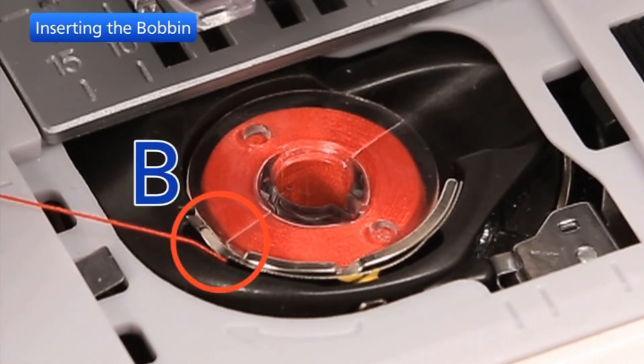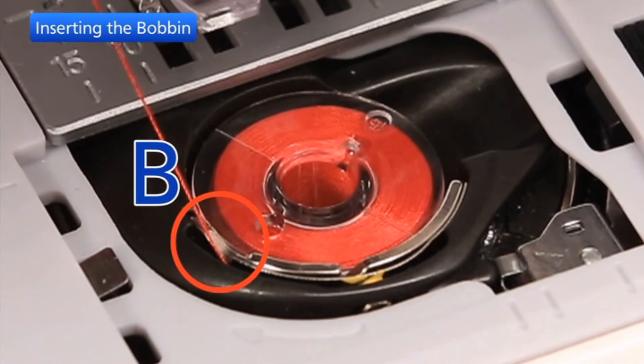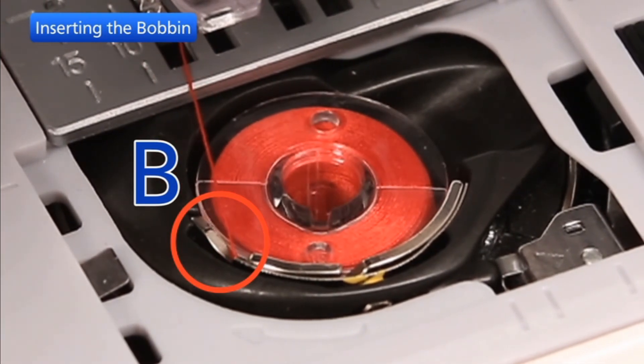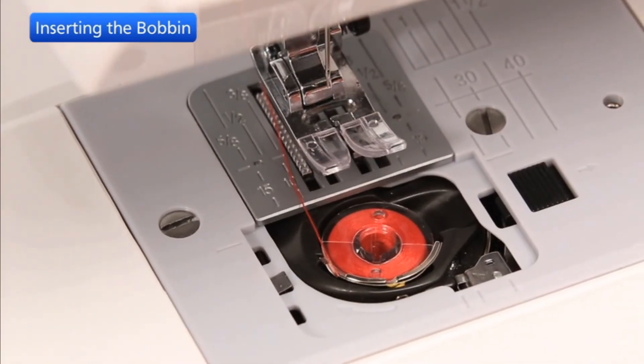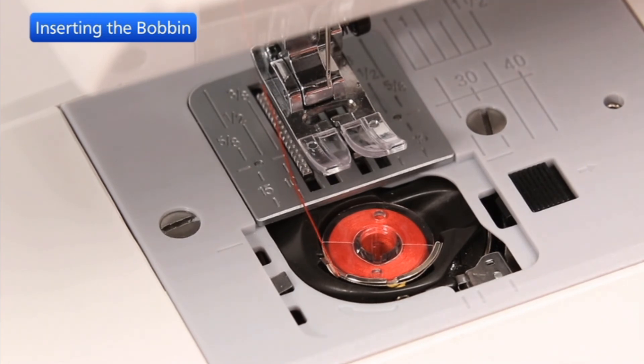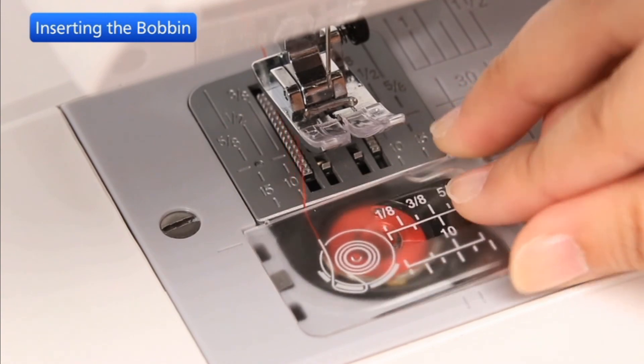Continue to draw the thread lightly until the thread slips into the second notch, B. Pull out about 6 inches of thread. Attach the hook cover plate.